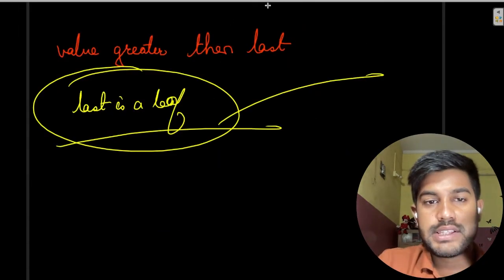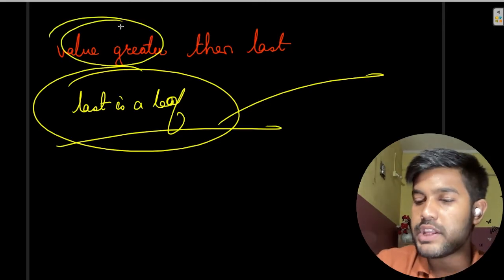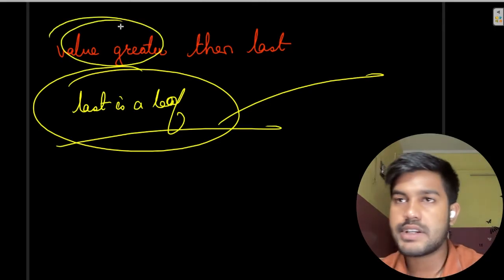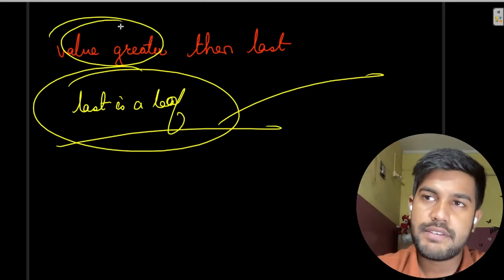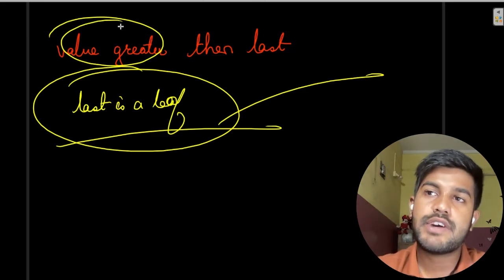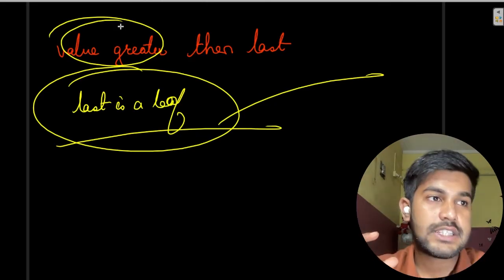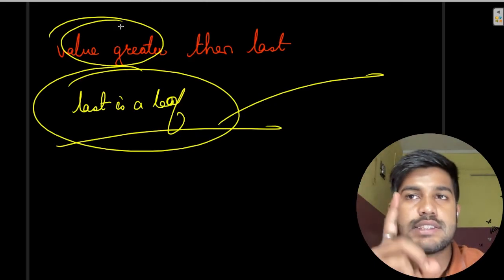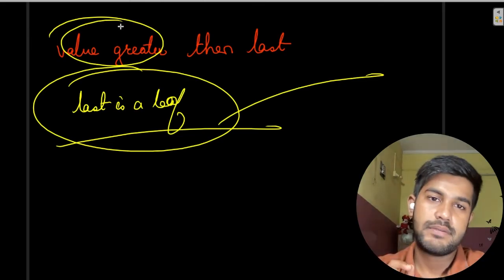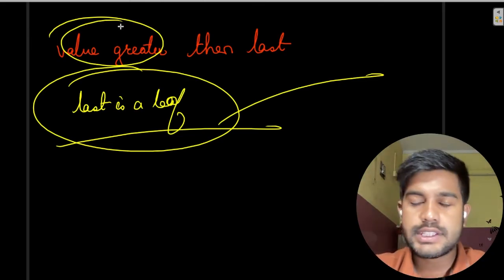Before inserting a value, the algorithm is very simple. We would simply start traversing and keep the values. Whenever we see a current value greater than the last value, we would take out the last value and say this is the leaf.